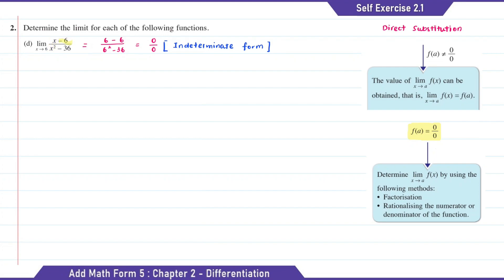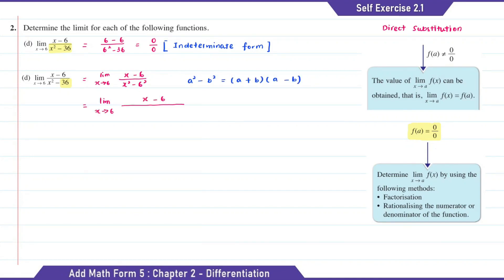To find the limit value, here we need to factorize the denominator. For the 36, we can write this as x squared minus 6 squared. To factorize the denominator, we're going to get (x plus 6)(x minus 6). So here we can cancel the x minus 6.